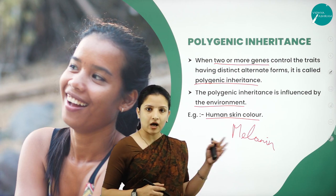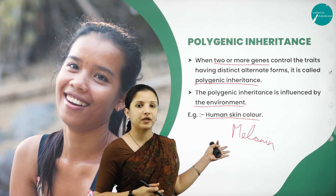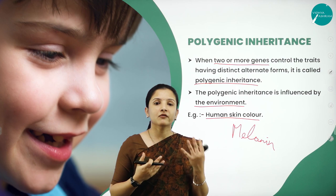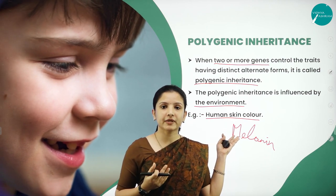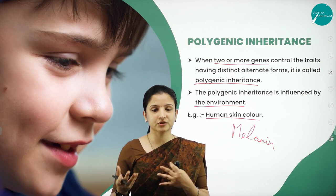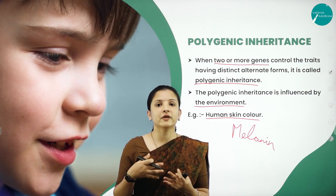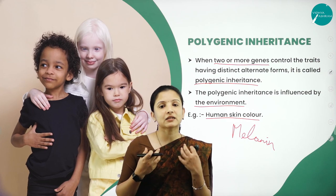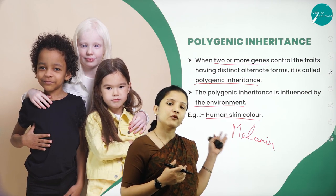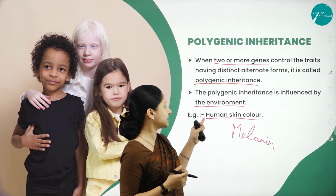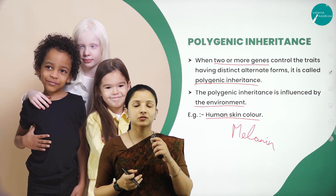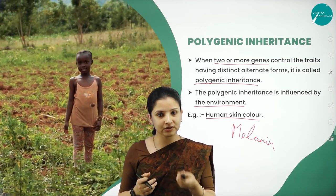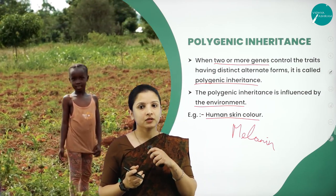Polygenic inheritance is also influenced by the environment. The best example is human skin color, which is influenced by a pigment called melanin. Melanin is a pigment controlled by genes. Apart from this, environment also plays a very important role — when we are too much exposed to the sun, our melanin content increases and we get a dark skin tone. When we are not exposed much to the sun, melanin reduces and we get a fair skin tone.